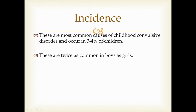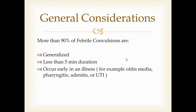Febrile seizures are the most common cause of childhood convulsive disorder and occur in 3 to 4 percent of children. They are twice as common in boys as in girls. More than 90 percent of febrile convulsions are generalized, less than 5 minutes in duration, and occur early in an illness — for example, otitis media, pharyngitis, adenitis, or UTI.